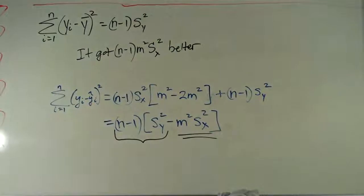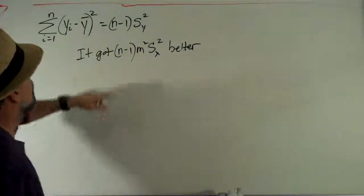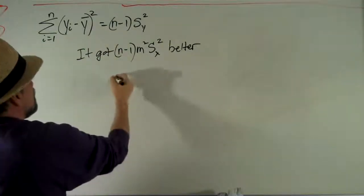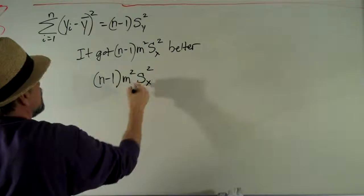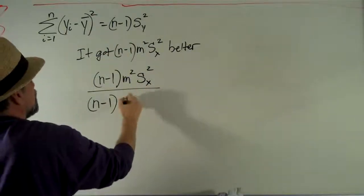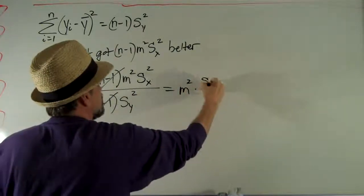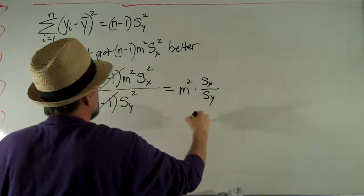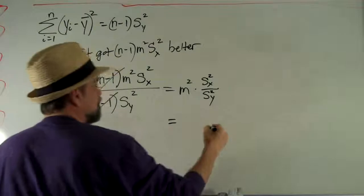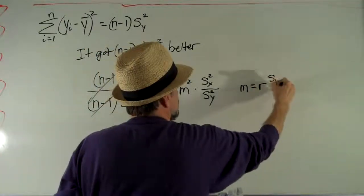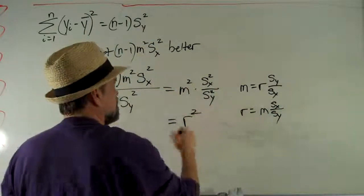And what does that mean? Well, let's see. If I compare it to my original sum of squares there, I would say it improved by n minus 1 times m squared times sx squared over n minus 1 times sy squared. And that's just m squared times sx squared over s y squared. Hey, you know what that is? Remember what m is? m is r times sx squared over sx. Which means that r is m times sx over s y. That makes this thing r squared.